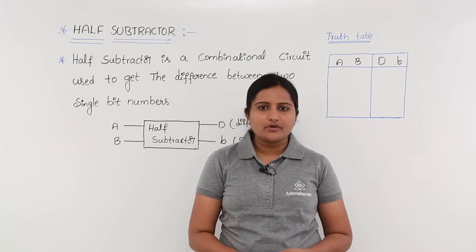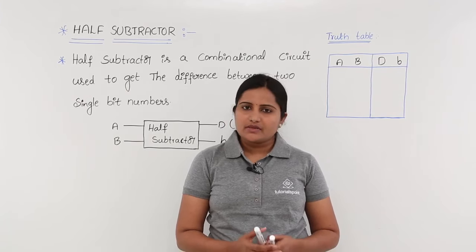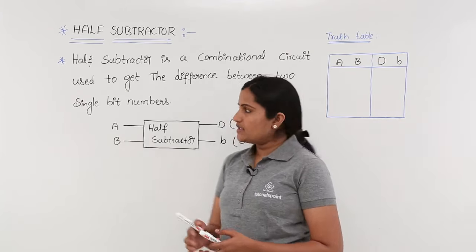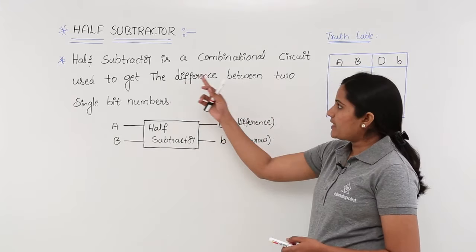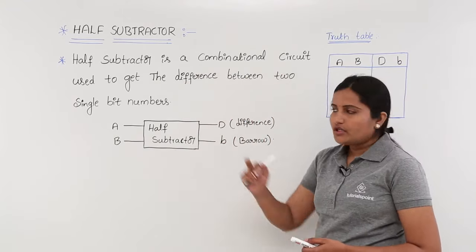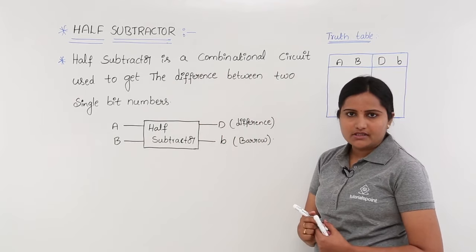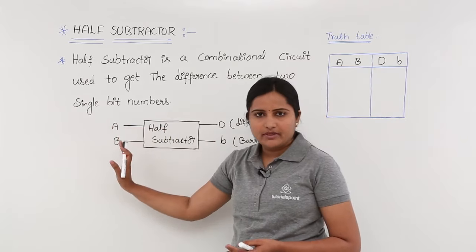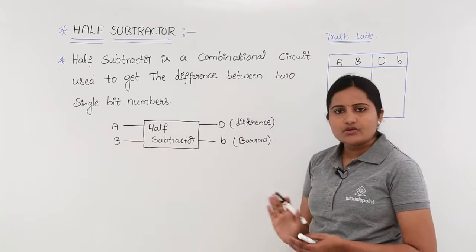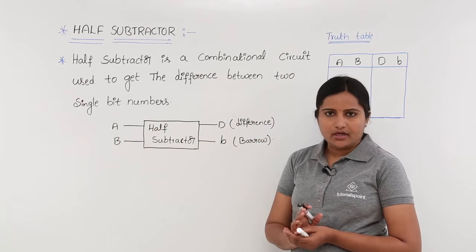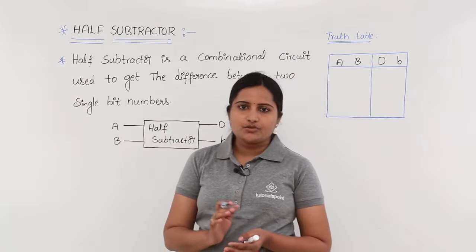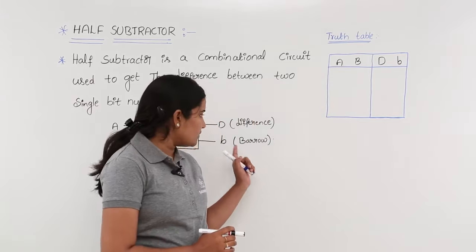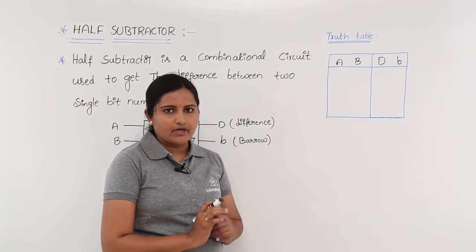In this class we are going to discuss about half subtractor. Similar to half adder, this is going to subtract two single bit numbers. Half subtractor is a combinational circuit used to get the difference between two single bit numbers. The block diagram has two single bit numbers as input and two outputs: difference and borrow. When subtracting two binary numbers we sometimes get a borrow, which is why we need to consider borrow as one of the outputs.